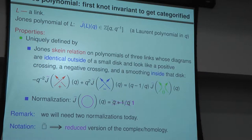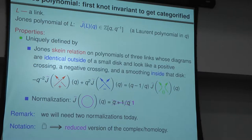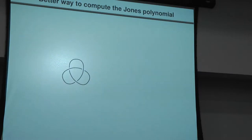This skein relation formula is not very convenient to use for computations, and it's not clear how to categorify it, because for categorification you want something that looks like a graded dimension. So let's look at another way to compute it — through the Kauffman bracket, which Tanq was talking about earlier today.